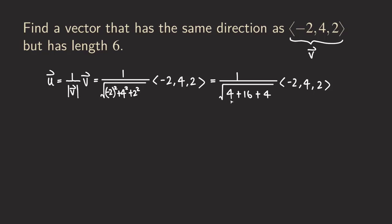So we get 24 inside the square root. We can actually break it as four times six, where four is a perfect square. So the four will come out as two, and we still get the square root of six. This whole fraction becomes one over two square root of six, because the denominator — square root of 24 — equals two square root of six.